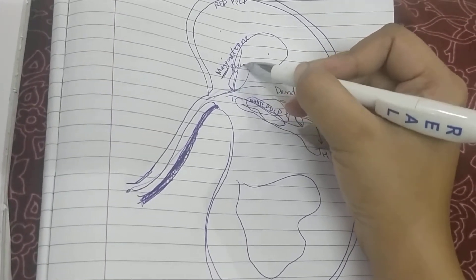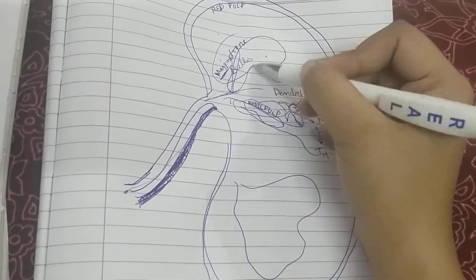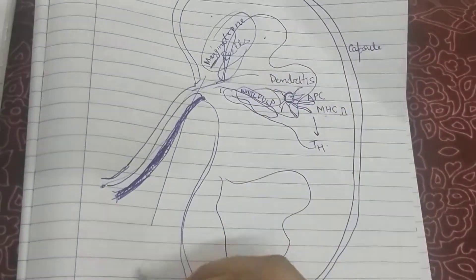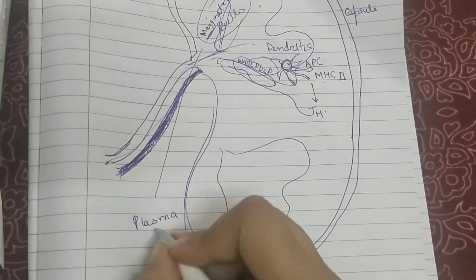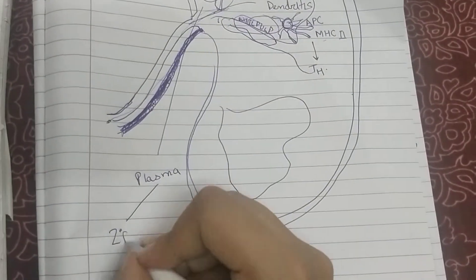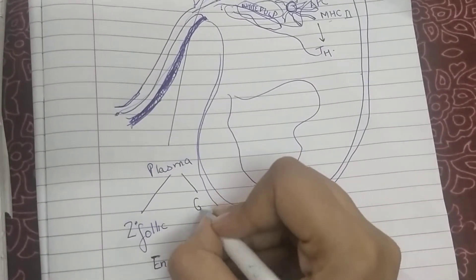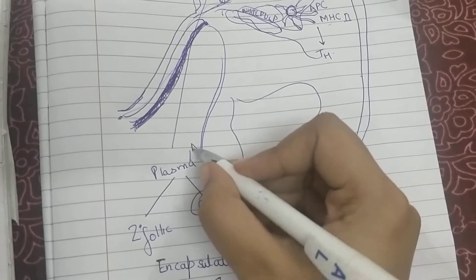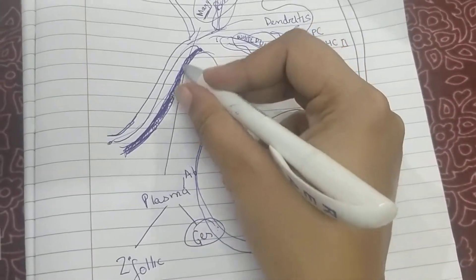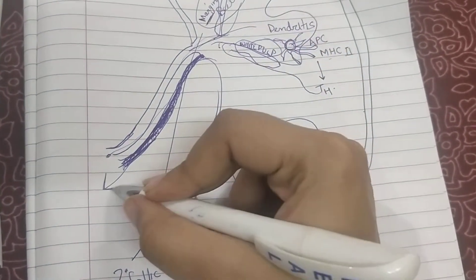These B cells are activated in the marginal zone. B cells activate and form plasma cells, then form secondary follicles and germinal centers, which leads to production of antibodies that migrate through the veins into the body and fight against the antigen.